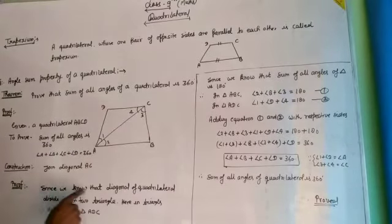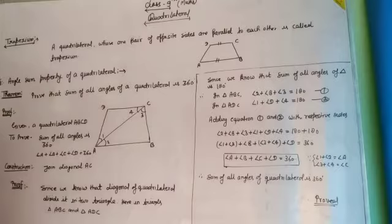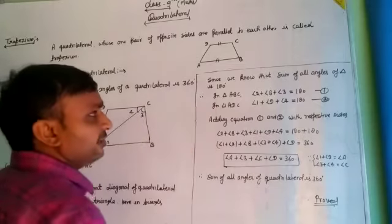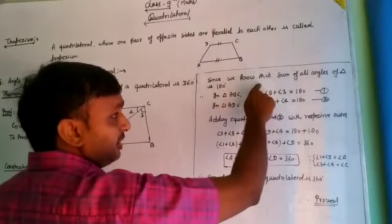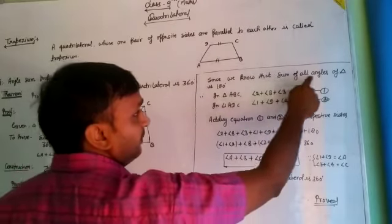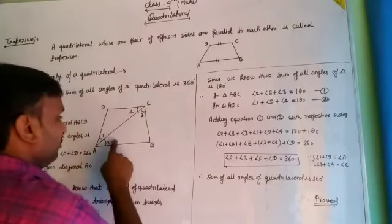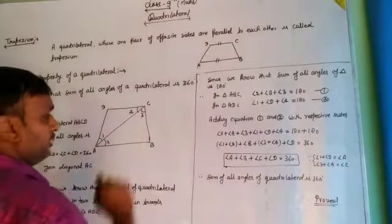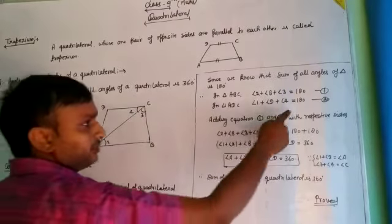Since we know that the diagonal of a quadrilateral divides it into two triangles — here triangle ABC and triangle ADC. We know from the chapter on triangles that the sum of all angles of a triangle is 180 degrees. So in triangle ABC: angle 2 plus angle B plus angle 3 is equal to 180 degrees. In triangle ADC: angle 1 plus angle D plus angle 4 is equal to 180 degrees.